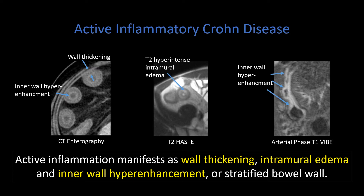These loops of distal ileum show wall thickening with inner wall hyper-enhancement and a nice targetoid or stratified appearance. Looking at a correlate on MRI, we can see again the targetoid appearance of the bowel, and notice that the submucosa in this case is T2 hyper-intense, indicating submucosal edema. On post-contrast MRE imaging, we can also see in this case very severe active inflammation with that robust inner wall hyper-enhancement. In the past this was called mucosal hyper-enhancement, but in severe active inflammation the mucosa is often denuded, so we now refer to it as inner wall hyper-enhancement.